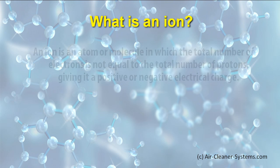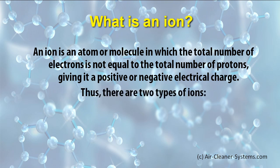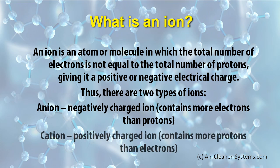What is an ion? An ion is an atom or molecule in which the total number of electrons is not equal to the total number of protons, which gives it a positive or negative electrical charge. There are two types of ions. An anion is a negatively charged ion, which contains more electrons than protons. A cation is a positively charged ion, which contains more protons than electrons.